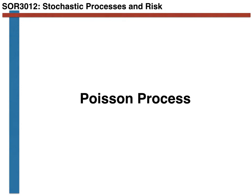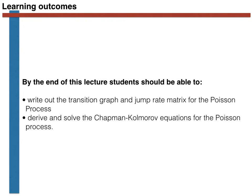In this video we are going to look at another example of a Markov chain in continuous time. The particular chain we are going to look at is called the Poisson process. By the end of this video you should be able to write out the transition graph and jump rate matrix for the Poisson process, and to derive and solve the Chapman-Kolmogorov equations for the Poisson process.